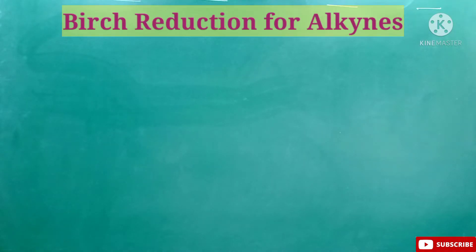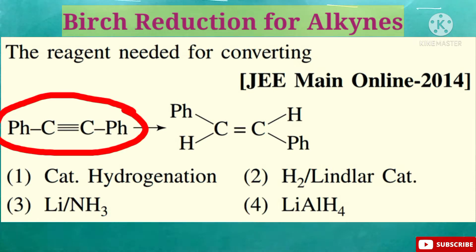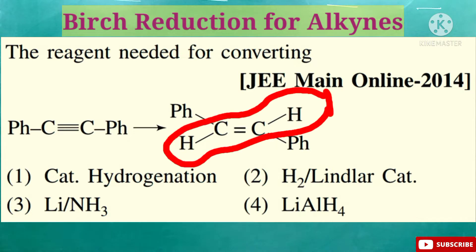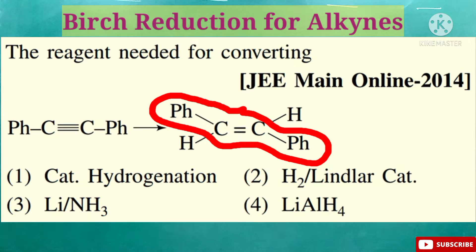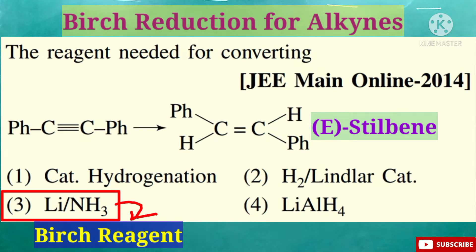The first question is on your screen. This question has been set in J.M.A.N.'s paper 2014. The reagent needed for converting Ph-C≡C-Ph to Ph-CH=CH-Ph. See here carefully — two hydrogens are in trans position and two phenyl groups are in trans position. The name of the compound is E-stilbene or trans-stilbene. The answer is option C, that is lithium in liquid ammonia, which is actually the Birch reagent.